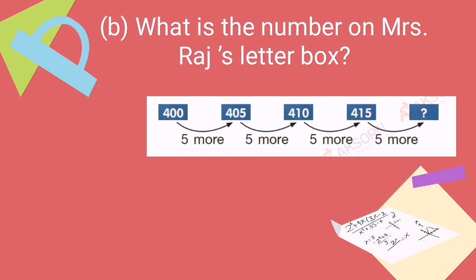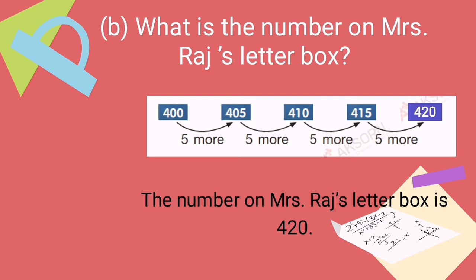What is the number on Mrs. Strudge's letterbox? Starting from 400 going down, we have 400, then we add 5 more — 405, 410, and then 415. So if we add 5 more to 415, it would become 420. The number on Mrs. Strudge's letterbox is 420.